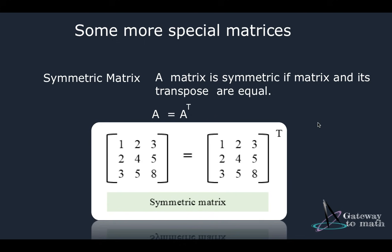So let's start with symmetric matrix to start with. A matrix is symmetric if the matrix equals its transpose. So here we have an example. The matrix is 1, 2, 3, 2, 4, 5, 3, 5, 8 and then the transpose.